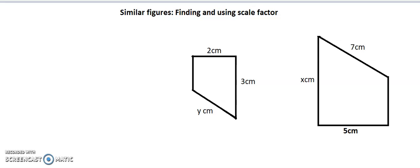Similar figures: finding and using scale factor. The first thing to think about is what is scale factor. Scale factor is the proportional relationship between both of these figures because we know that they are similar. So straight away I am looking at my 2, and somehow this 2 centimeters we turned it into 5 centimeters.